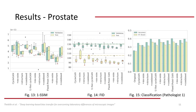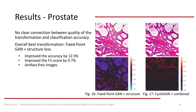For the results of the prostate biopsies, Fixed Point GAN with structure loss led to the best SSIM and FID results. However, a clear connection between the classification and transformation quality could not be established, as other variations achieved the highest accuracies and F1 scores. Investigating the transformed images, the results indicated that SSIM and FID scores are confirmed. While CycleGAN with combined losses led to the best classification scores, Fixed Point GAN with structure loss continuously led to artifact-free images and improved accuracies and F1 scores, which is why we deemed it the best variation.